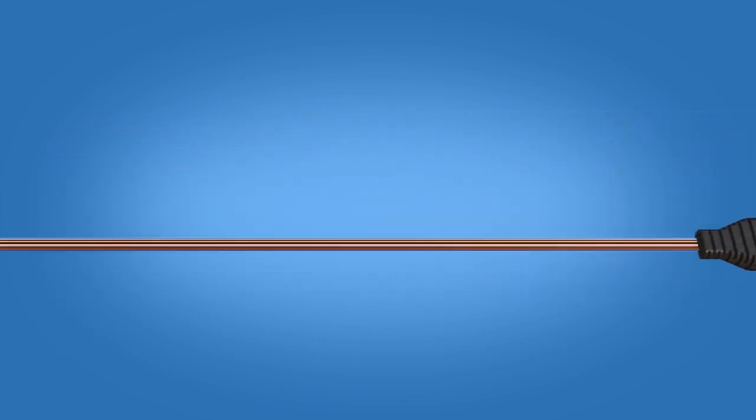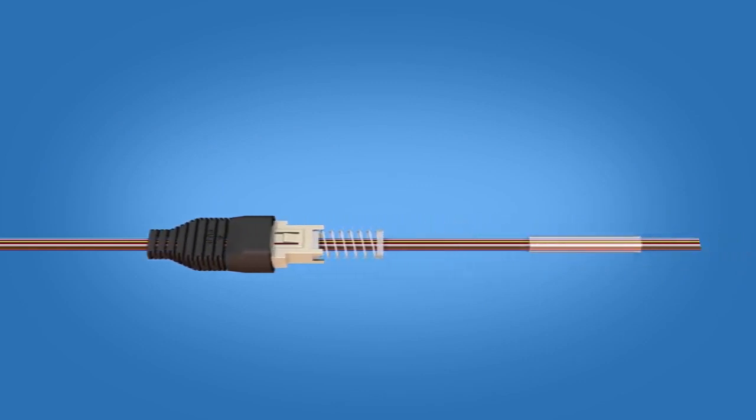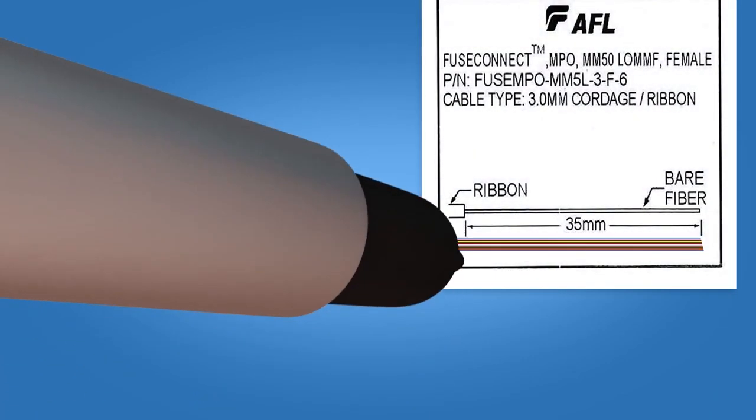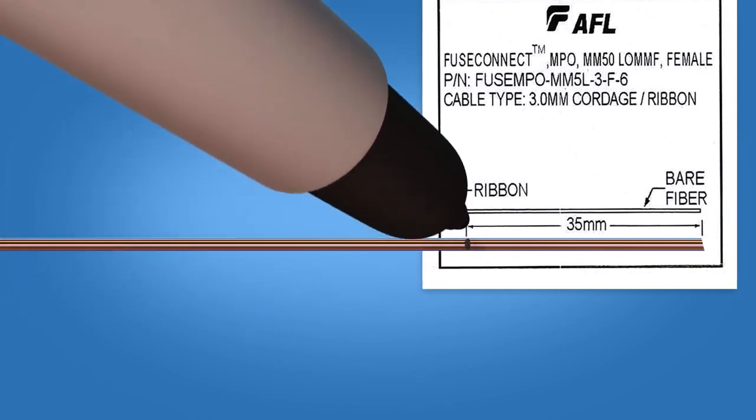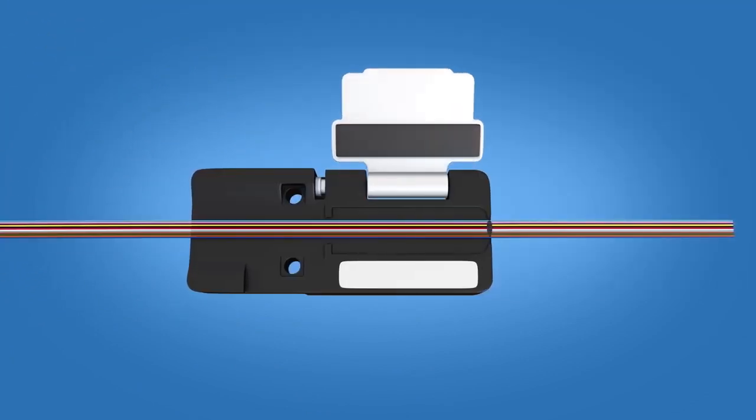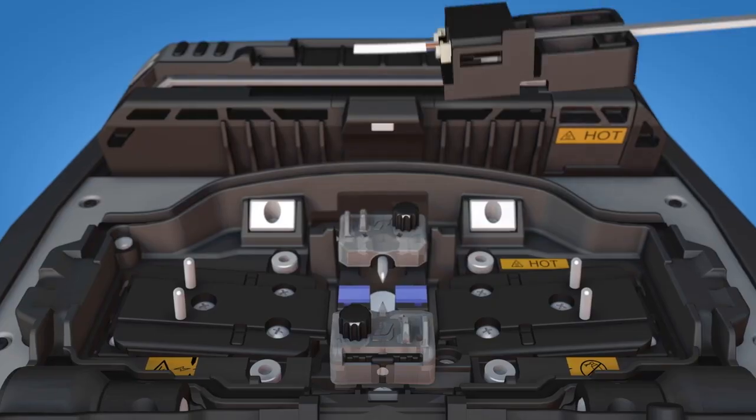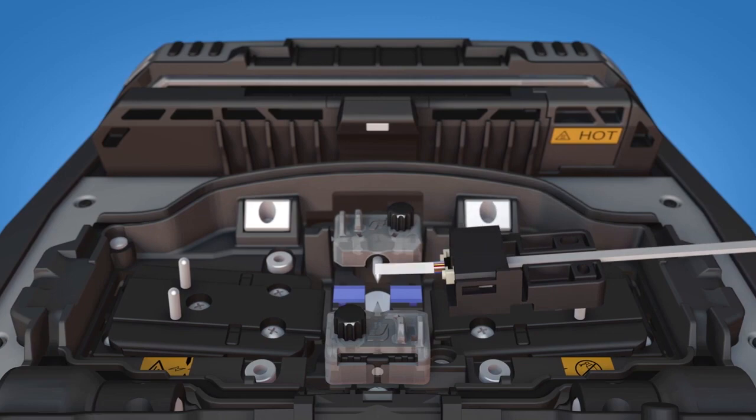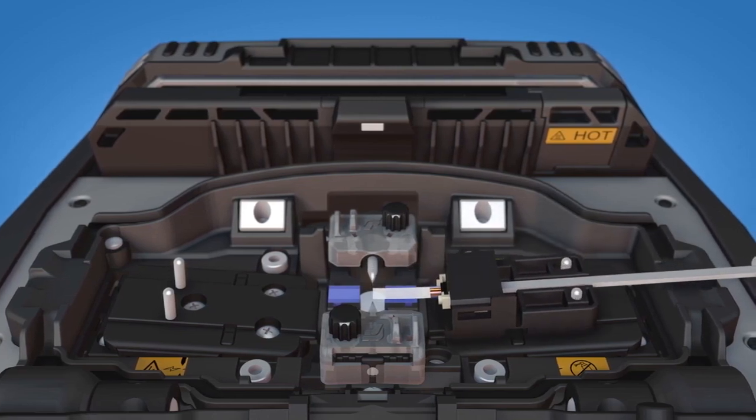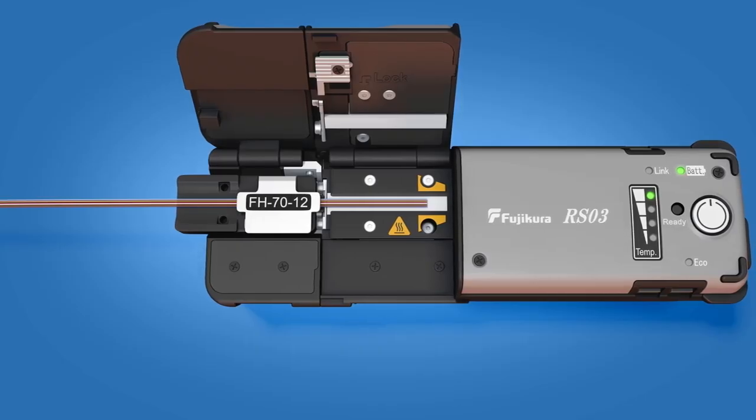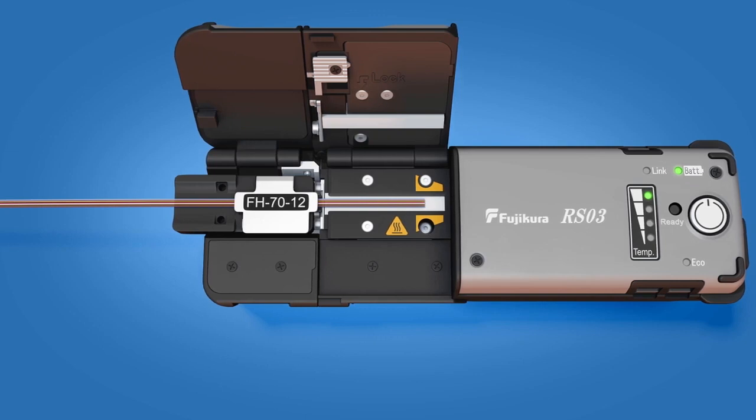Carefully load the ribbon boot and spring unit assembly and heat sleeve onto the ribbon fiber. Mark the ribbon at 35mm using the template on the packaging. Set the ribbon onto the fiber holder with the aqua fiber closest to the hinge. Load the ferrule unit onto the right side of the splicer.